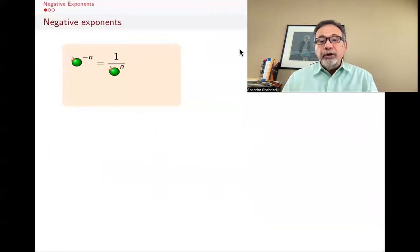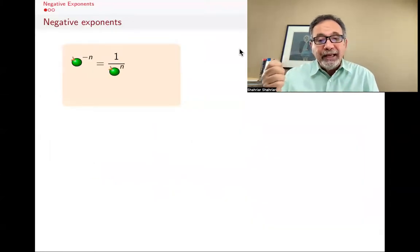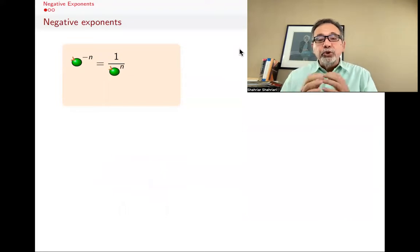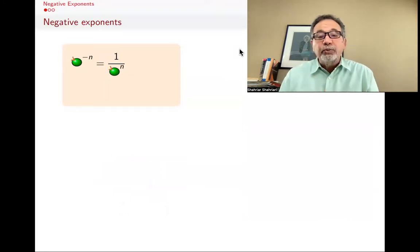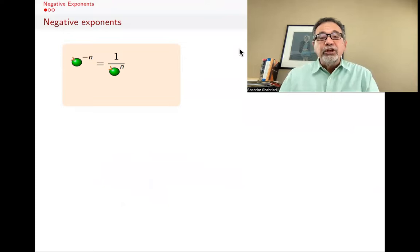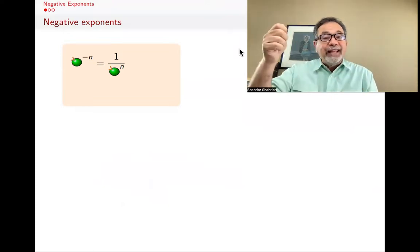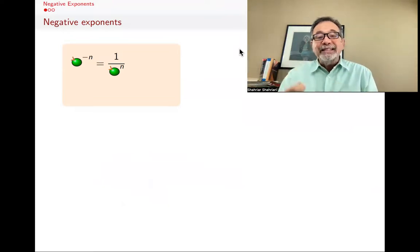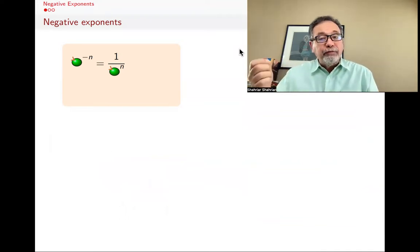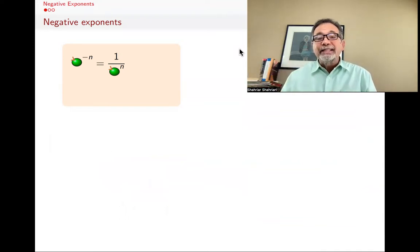So if you have something raised to a power, but the power happens to be a negative number, remember that you're not getting a negative answer. What you're getting is a fraction. This is by definition. By definition, if you take anything — apple — raise it to a negative power, negative n, that's the same as one over the same apple raised to the positive power n. So apple to the negative n is the same as one over apple to the n.